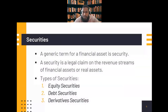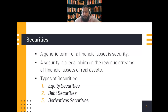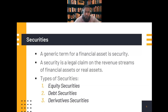Financial assets can sometimes be called securities — a generic term where any financial asset can be named a security. A security is a legal claim on the revenue streams of financial or real assets. There are three types of securities: equity securities, debt securities, and derivative securities.